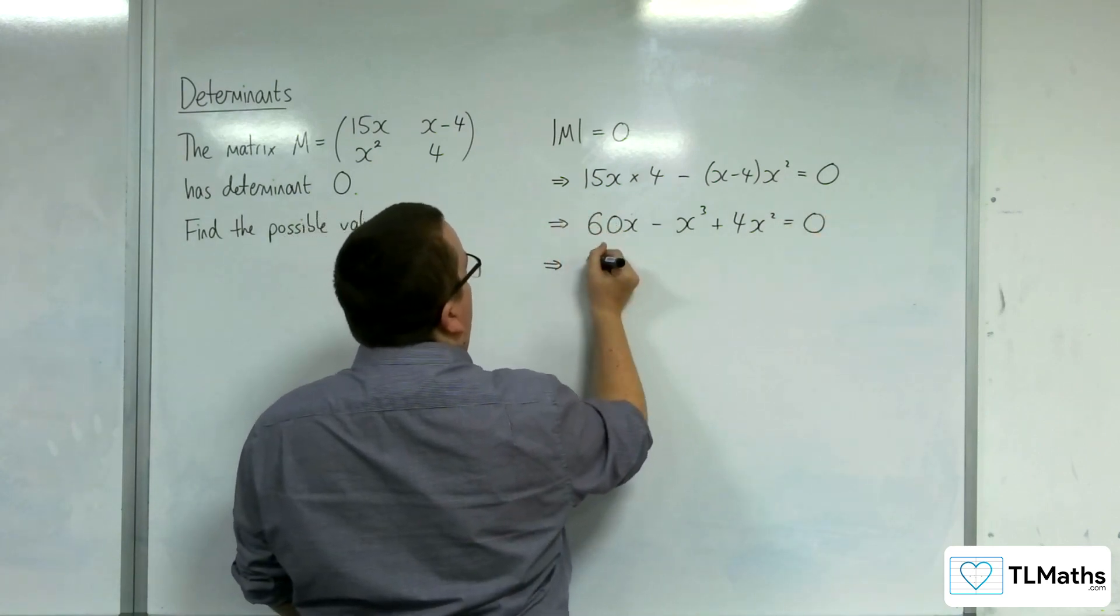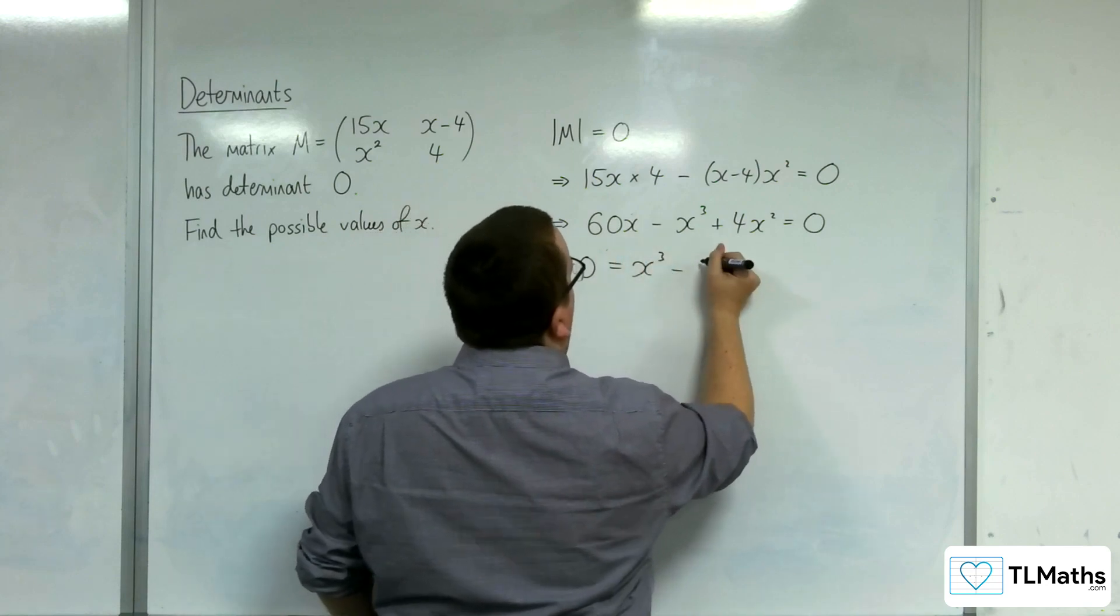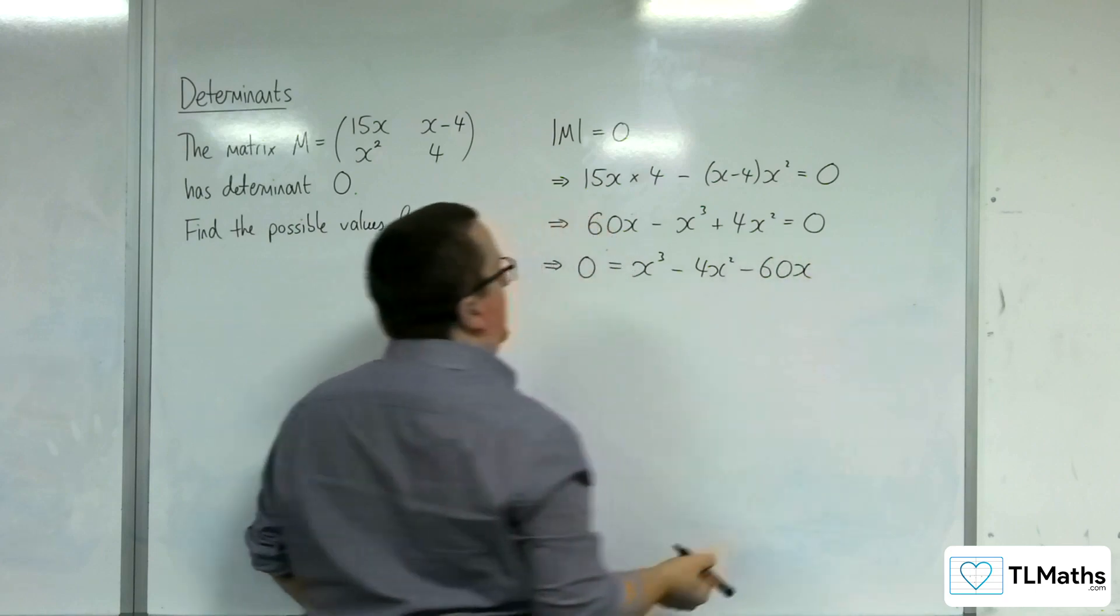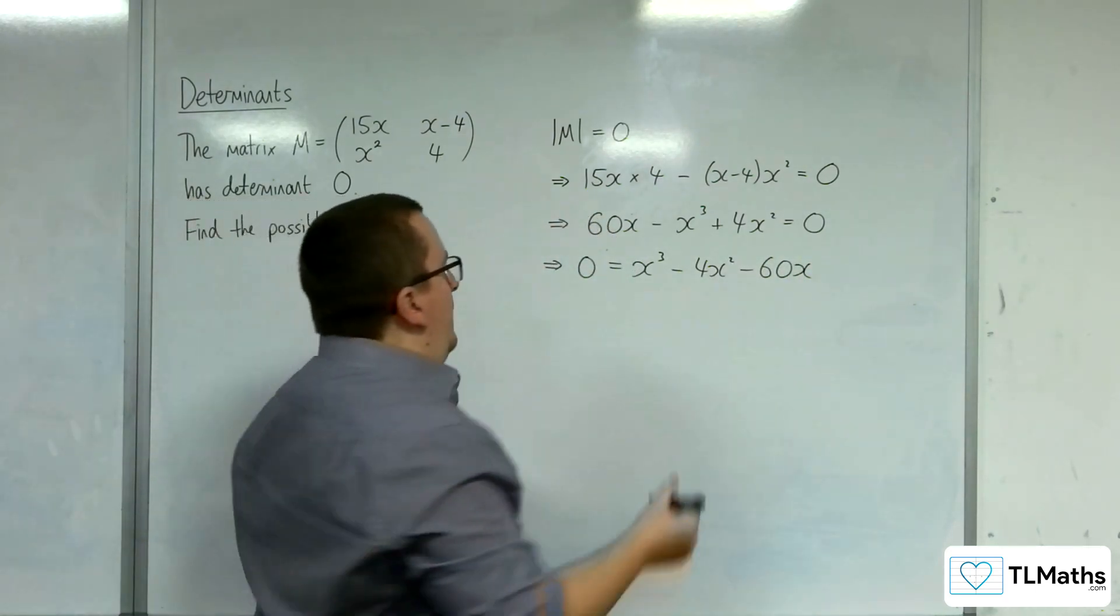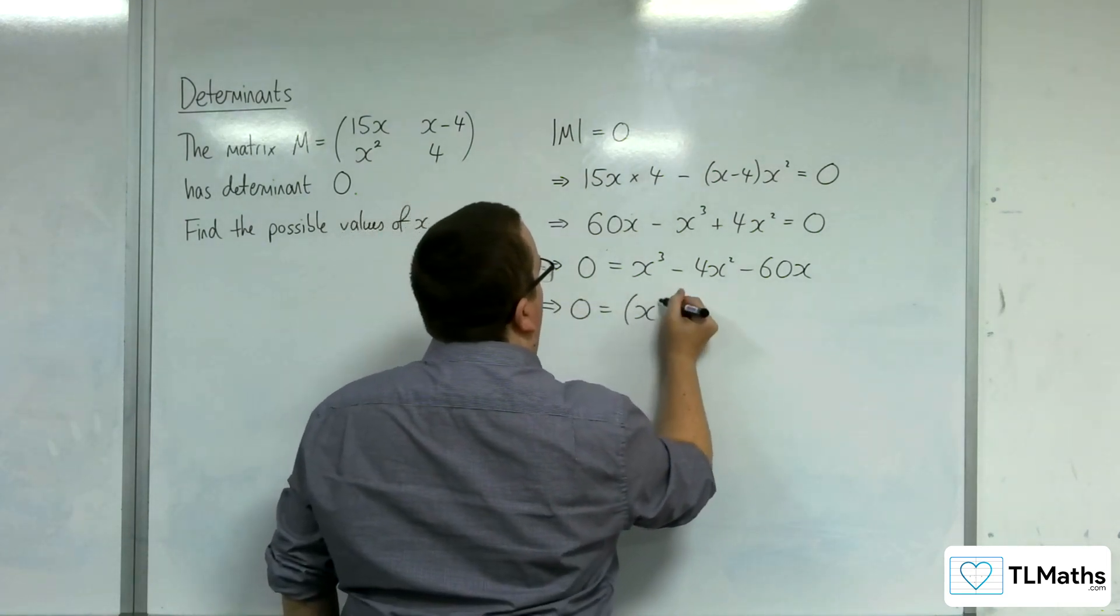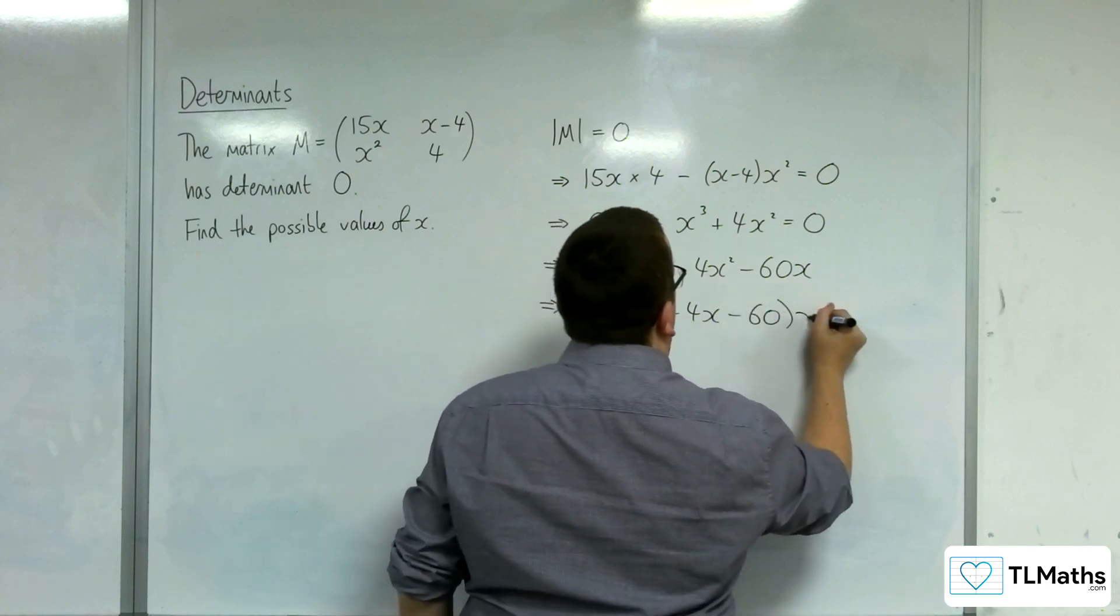Let's move everything to the other side of the equation. So 0 is equal to x cubed take away 4x squared take away 60x. Factor out the x, so we're going to have x squared take away 4x take away 60 times x.